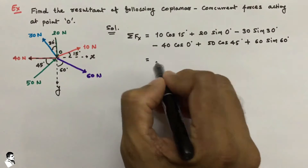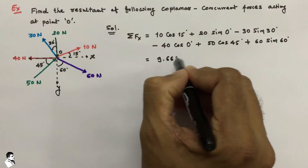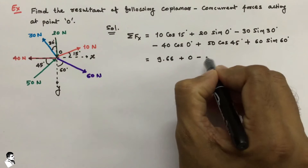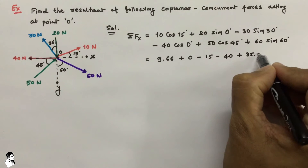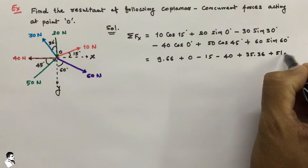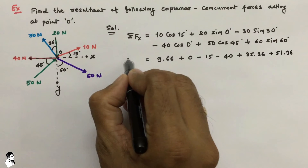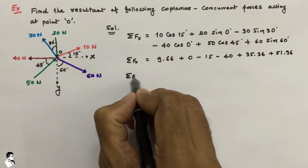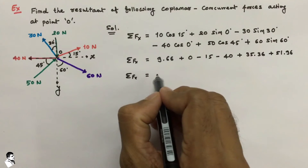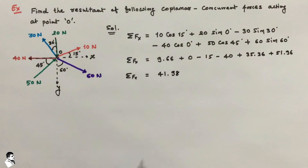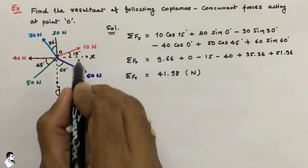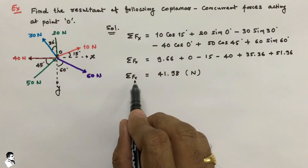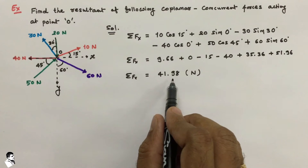Sorting out the X-axis summation: 9.66 plus 0 minus 15 minus 40 plus 35.36 plus 51.96. Solving this with a calculator, the final answer for the summation of all forces along the X axis is 41.98 Newton.